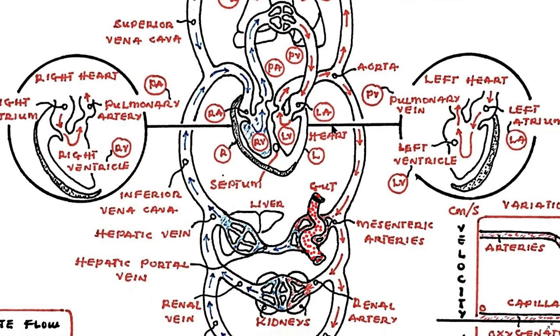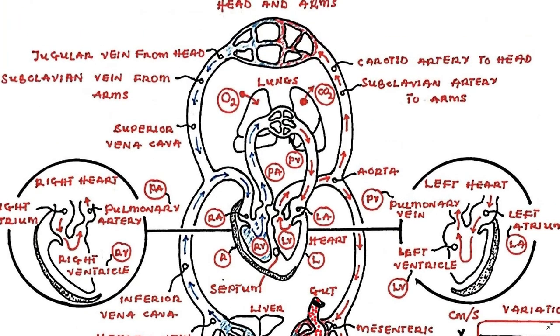As we said earlier on, deoxygenated blood moves from the right ventricle, passes through the pulmonary arteries, and ends up in the lungs. Oxygenated blood from the lungs moves through the pulmonary veins and into the left atrium. This summarizes the pulmonary circulation, which occurs between the right heart, the lungs, and the left heart.